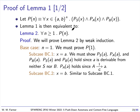Let's prove Lemma 1. We define a property P(n) of natural numbers, which says: for all strings of length n formed from A and B, those strings satisfy P_S, P_A, and P_B. Lemma 2 — which is equivalent to Lemma 1 — states: for all natural numbers greater than or equal to 1, P(n) holds. Lemma 2 is just another way of stating Lemma 1 in terms of strings of length n, and we will prove it by weak induction.